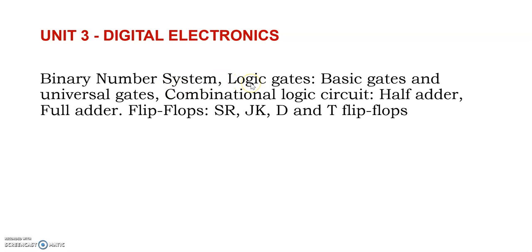Then we go into logic gates — the basic building blocks. To design any device, even an Intel Core i7 processor, the fundamental elements inside are gates. The primary gates like NAND and NOR are called universal gates. Using these universal gates, we can realize other gates like OR, AND, XOR, and XNOR. We will study what all the gates are and specifically what the universal gates — NAND and NOR — do.